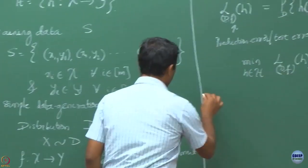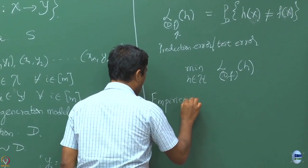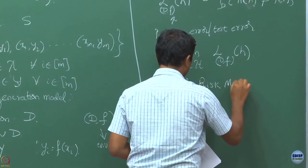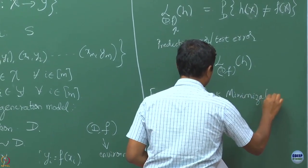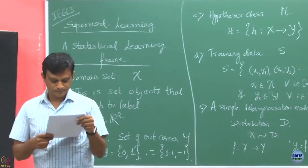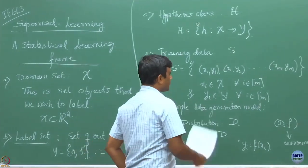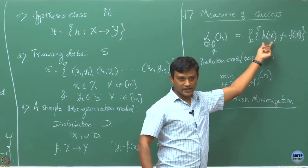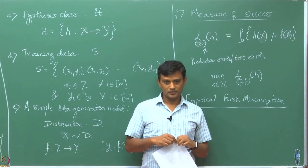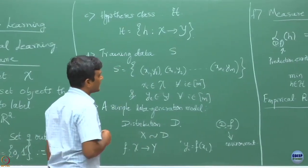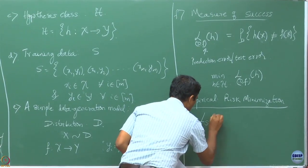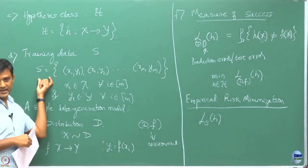The standard thing here is to compute an empirical estimate of this quantity from the data sample. So now, what will be a good empirical estimate of this quantity from the data samples I have? One thing I can do is define delta_S(H), where S is the training data that I have been given.